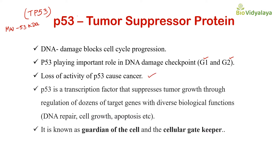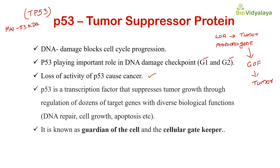You have to remember that in the case of tumor suppressive proteins, loss of activity will lead to the formation of tumor. In the case of proto-oncogenes, gain of function will lead to the formation of tumor. So loss of activity or loss of function of P53 causes cancer.